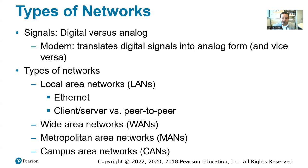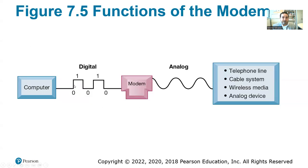There are two types of signals. We have the digital signal, which refers to on or off — zeros and ones. Then we have analog signals, which are the wavy-looking signals. Think of digital signals as what's sent from your computer until it reaches the modem. Analog signals are used in phone lines and cable lines. When you send your message from your computer to the modem, that's a digital signal — zeros and ones.